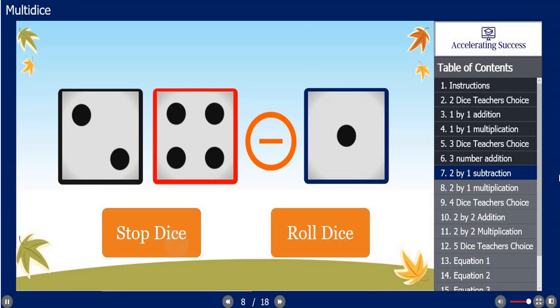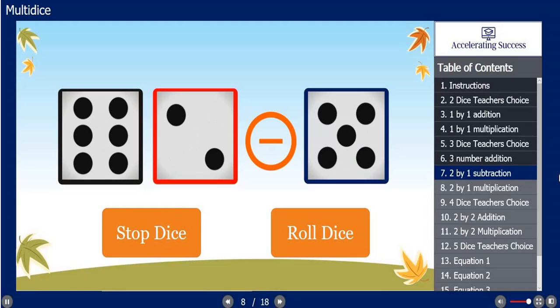The teacher always has the option to stop the die, form the equation, roll the die, get a brand new equation, stop the die, and so on and so forth.